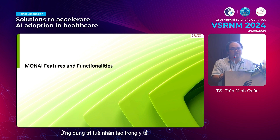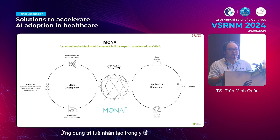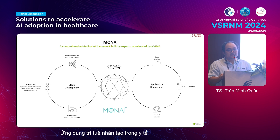The features and functionality of MONAI are divided into three phases. For model development, we collect and create data — MONAI Label helps you clean and annotate the data. After training, we can pack everything. It can be installed anywhere: on cloud services, on on-premises machines in your local hospital, or even on edge devices. For medical devices requiring special installation treatment, we provide the protocol to handle that as well.